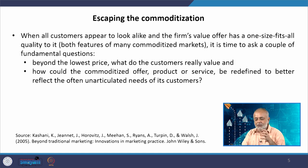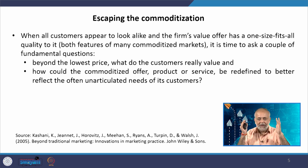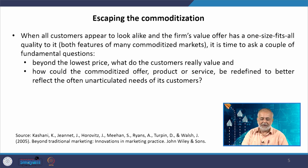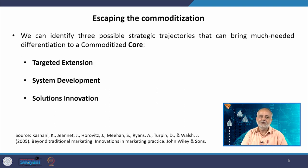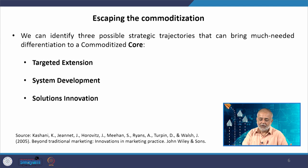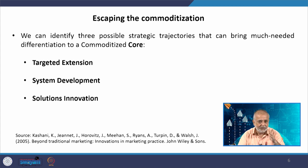When all customers appear to look alike and the firm's value offer has a one-size-fits-all quality — both features of many commoditized markets — it is time to ask fundamental questions: beyond the lowest price, what do customers really value? How could the commoditized offer — product or service — be redefined to better reflect the often unarticulated needs of its customers? We can identify three possible strategic trajectories: targeted extension, system development, and solutions innovation.